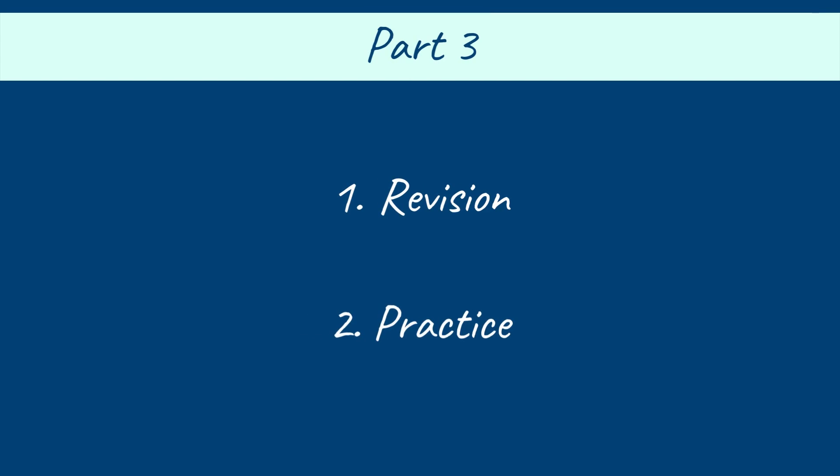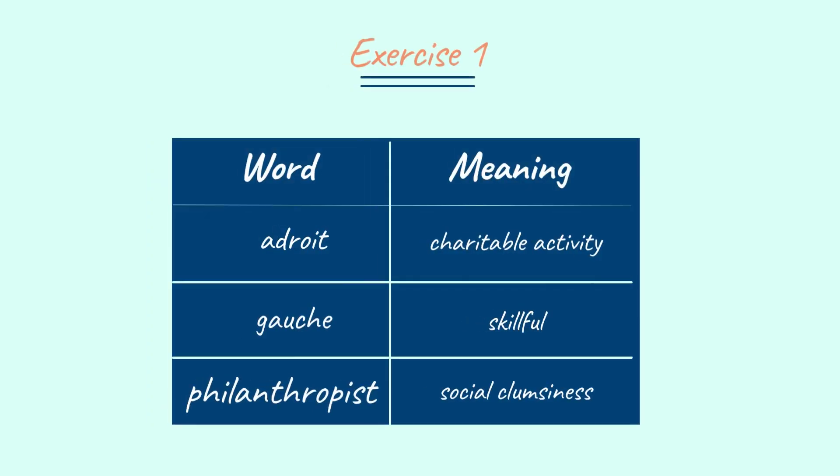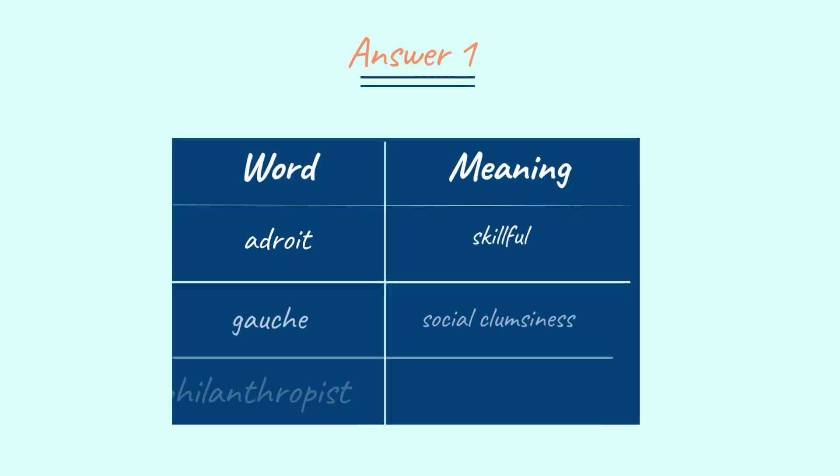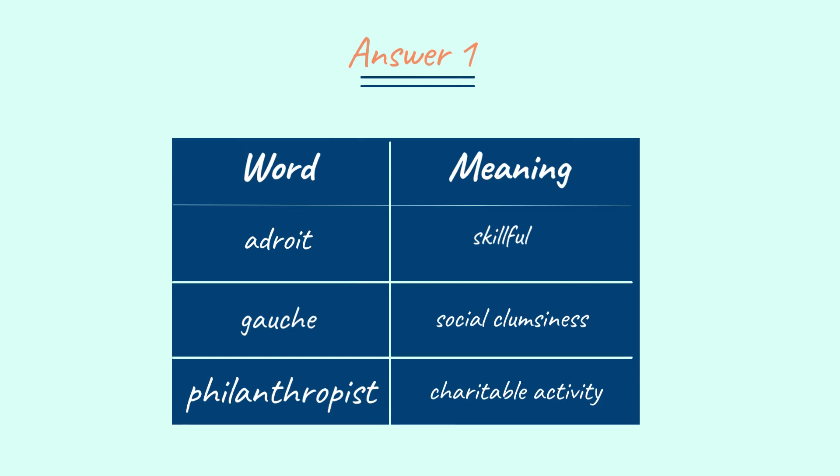Now comes Part 3 of the video. In this part, we will revise the root words and related words learned in Part 1 and Part 2, then we will give you plenty of exercises to practice. This is Exercise 1. You need to match the word with the correct meaning. Pause the video and solve. The answers are: Adroit — skillful; Gauche — social clumsiness; Philanthropist — charitable activity.